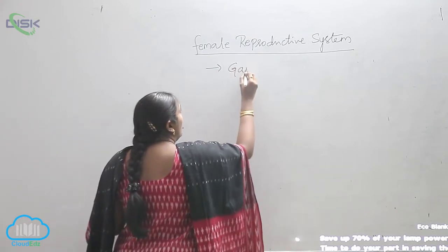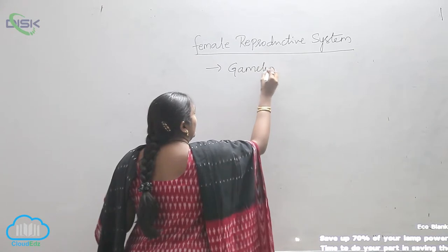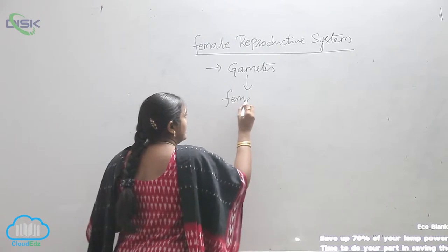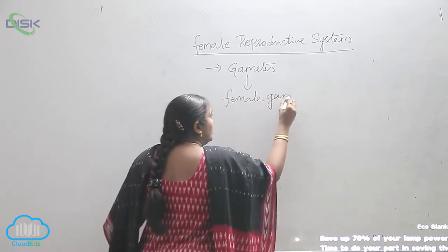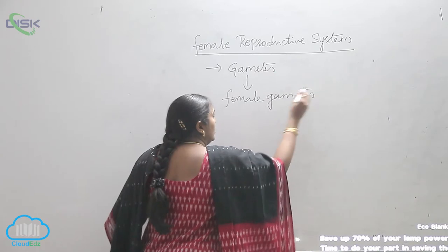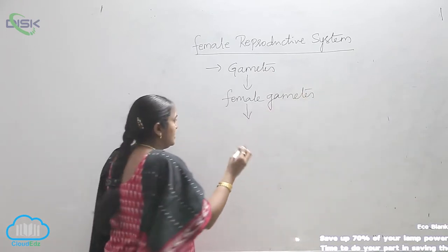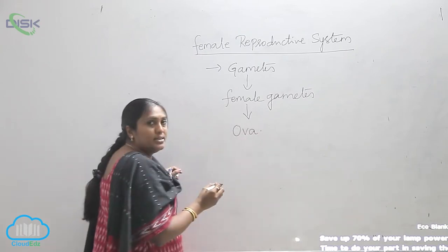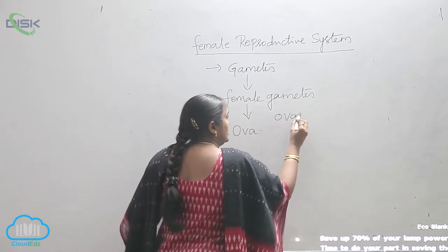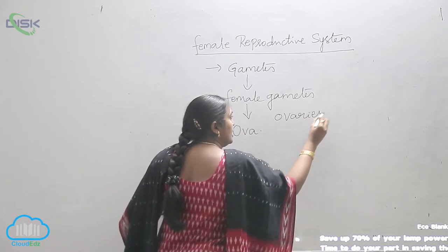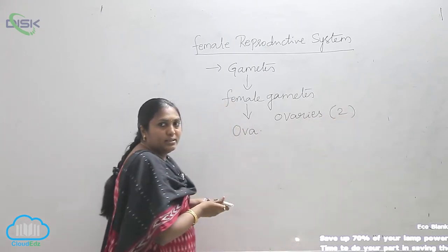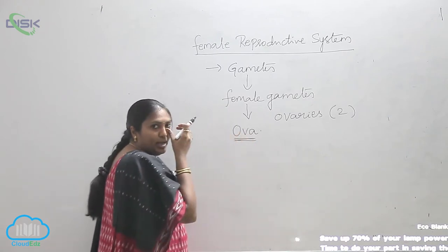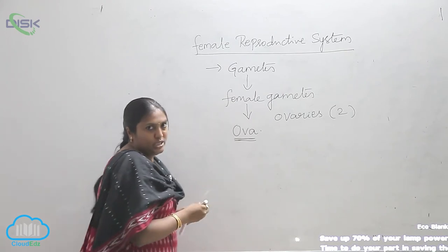The gametes involved in this particular formation we call the female gametes. What are the products of this gametogenesis, or oogenesis? It is nothing but the ova. The organs which are involved are the ovaries, which are two in number — that means they are paired — and ova is the ultimate product of oogenesis.